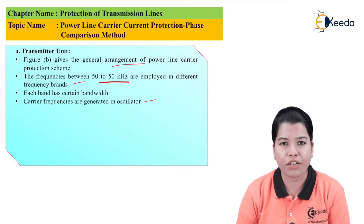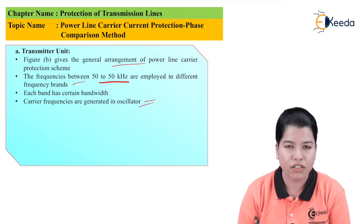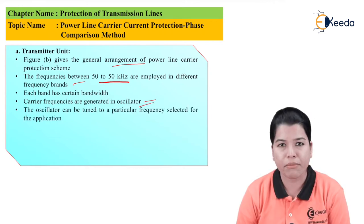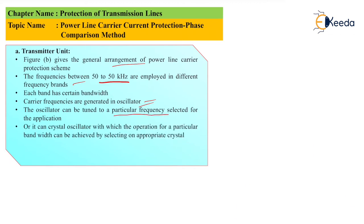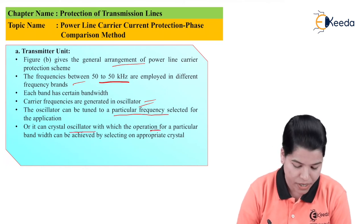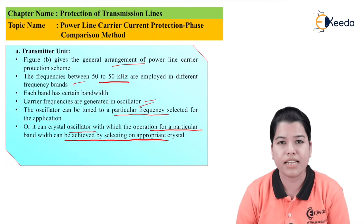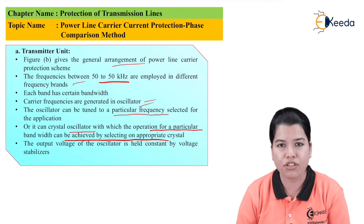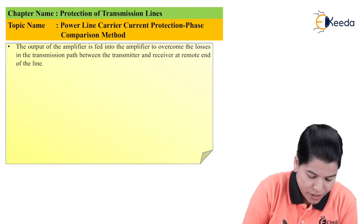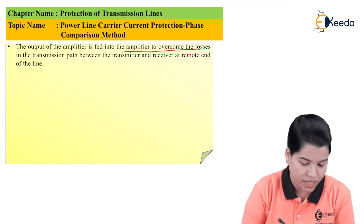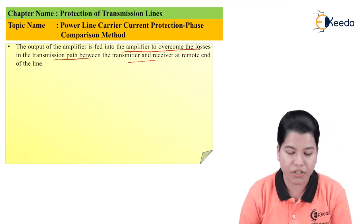The carrier frequencies required to transmit and receive the signal are generated by the carrier oscillator. This oscillator can be tuned to a particular frequency selected for a particular operation. It can be a crystal oscillator with which operation for a particular bandwidth can be achieved by selecting the appropriate crystal. The output voltage of the oscillator is held constant by voltage stabilizers. The output of the oscillator is fed to the amplifier to overcome losses in the transmission path between the transmitter and receiver at the remote end of the line.